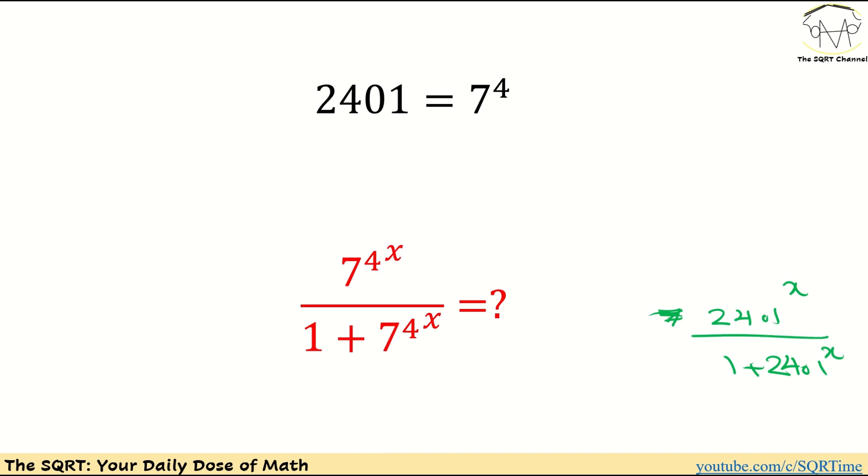If you do this you're going to see that it's basically 7 to the power of 4. So instead of writing this 2401 I'm going to write it as 7 to the power of 4, and then we need to keep x and everything is going to be similar.